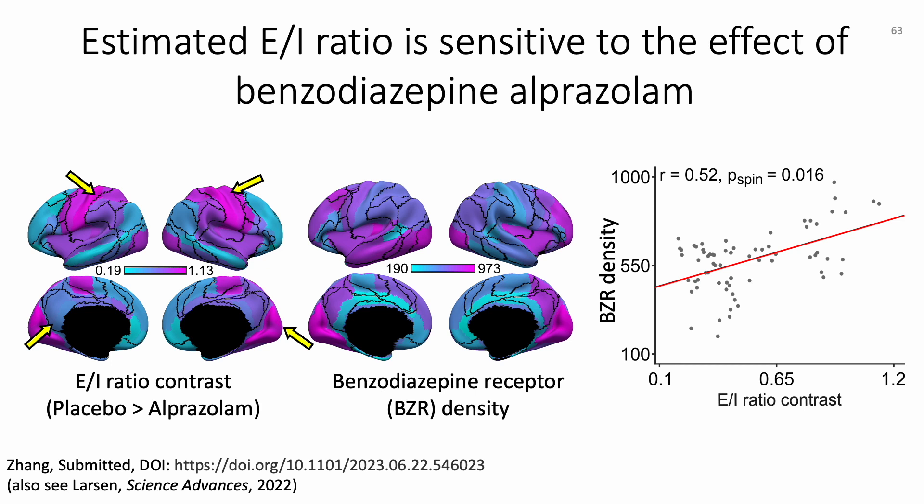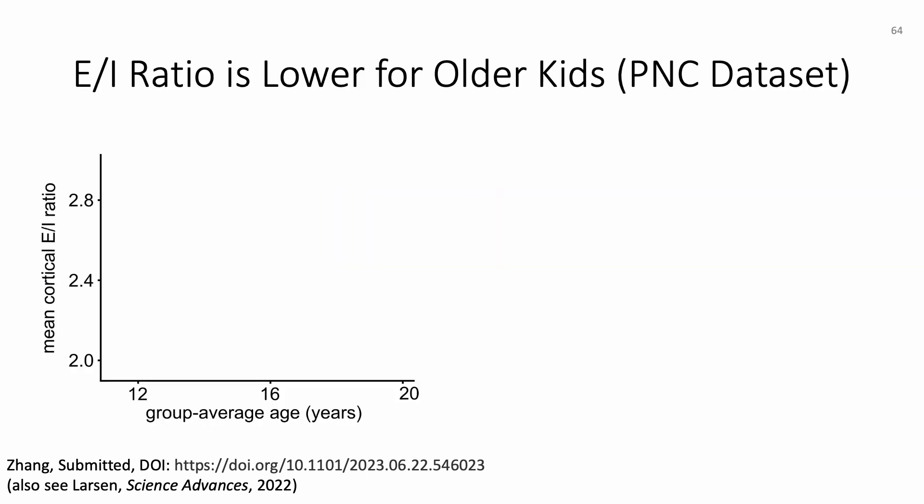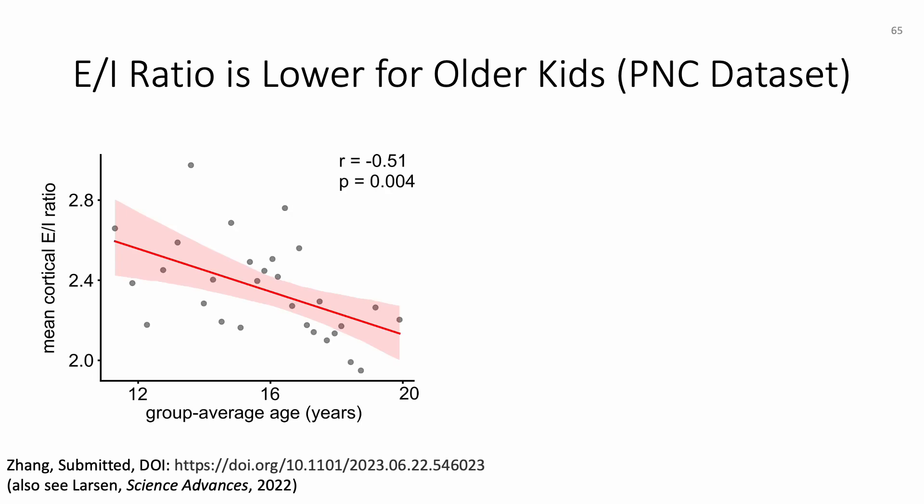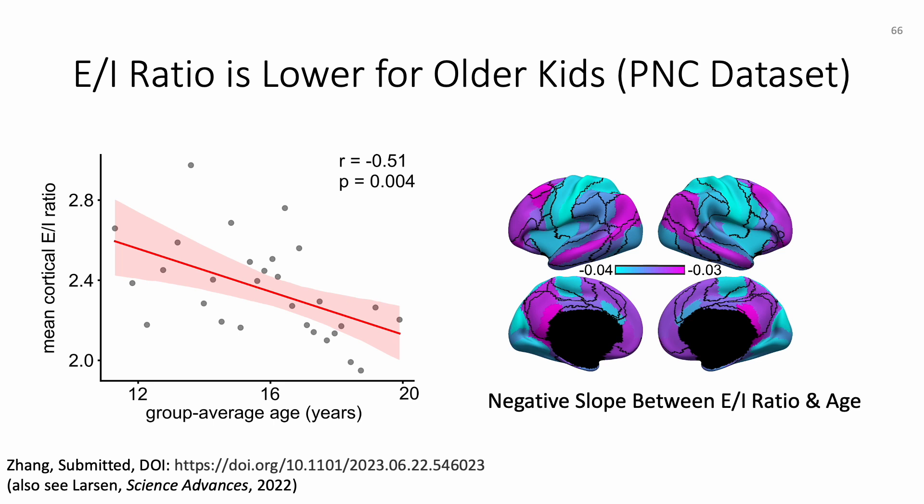We next applied this model to study EI ratio changes during development in youth using the Philadelphia Neurodevelopmental Cohort, dividing the dataset into 29 groups of 30 participants based on age. We found that older children exhibited lower EI ratio, consistent with previous studies. This negative relationship between age and EI ratio was observed for all cortical regions, all significant after false discovery rate correction at 0.05. The reduction in EI ratio was most rapid in sensory-motor regions compared with association regions.